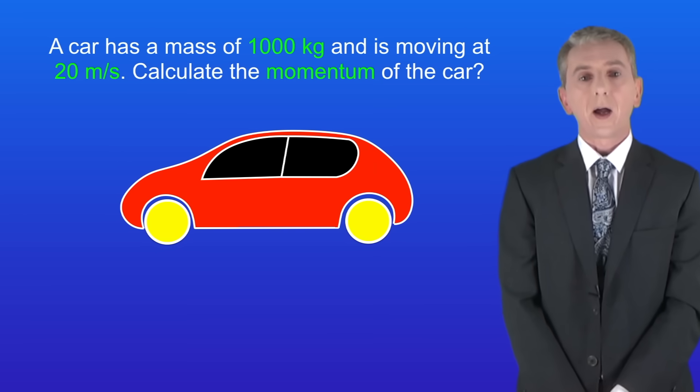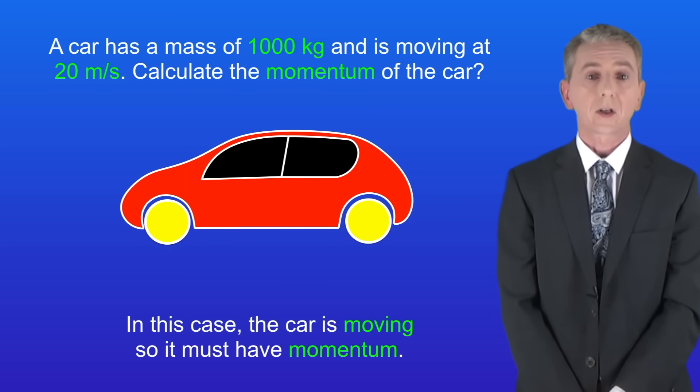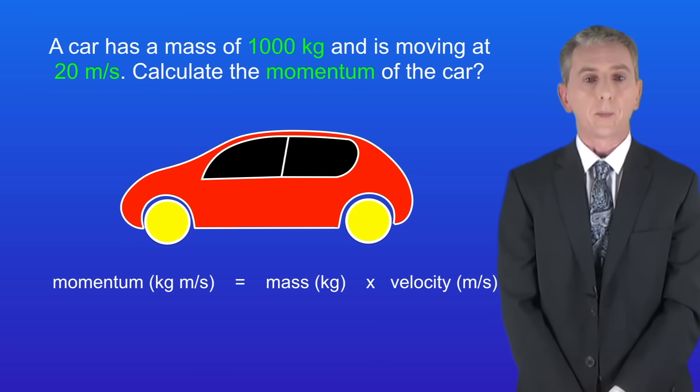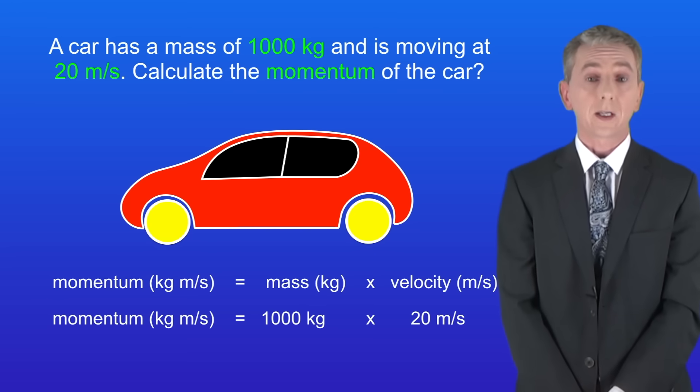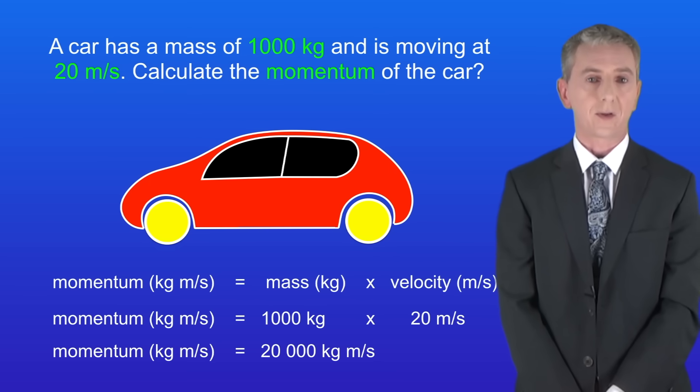Here's another question. A car has a mass of 1000 kg and is moving at 20 meters per second. Calculate the momentum of the car. So again pause the video and try this yourself. Okay in this case the car is moving so it must have momentum. Remember that momentum equals the mass multiplied by the velocity. The mass is 1000 kg and the velocity is 20 meters per second. Multiplying 1000 by 20 gives a momentum of 20,000 kg meter per second.